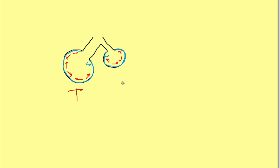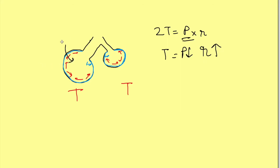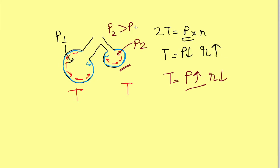If we say that the tension T is the same in both alveoli, according to 2T = P × R, can you tell how much pressure will be generated? In the bigger alveolus, R is larger, so the same tension will create less pressure — call it P1. In the smaller alveolus, R is lesser, so the same tension generates more pressure — call it P2. Therefore P2 is greater than P1 because of the smaller radius.